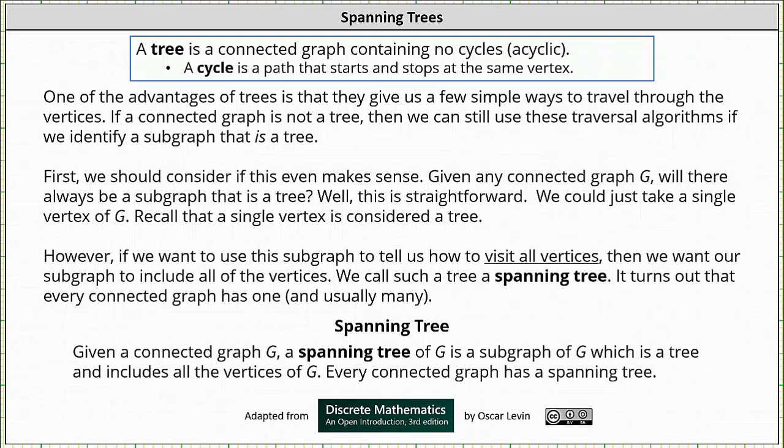Welcome to a lesson on spanning trees. For a quick review, a tree is a connected graph containing no cycles, meaning the graph is acyclic. A cycle is a path that starts and stops at the same vertex.